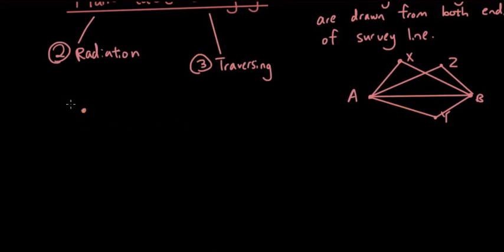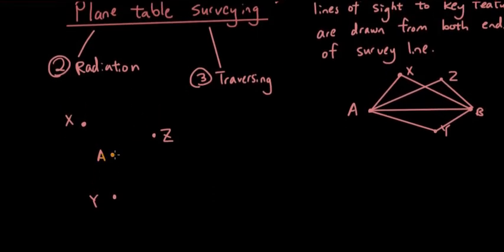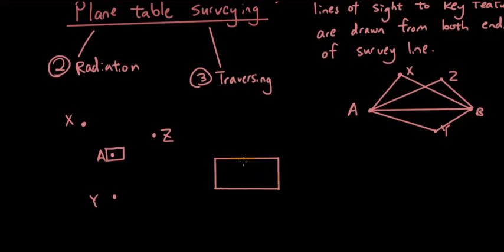Radiation is a method used when the area is very small, because otherwise it's very time-consuming. Let's say there are points X, Y, and Z that we're trying to map. You find a location close to all three points — call it point A — and you place a plane table at point A. On the table you have a piece of paper with a point A-dash representing point A.